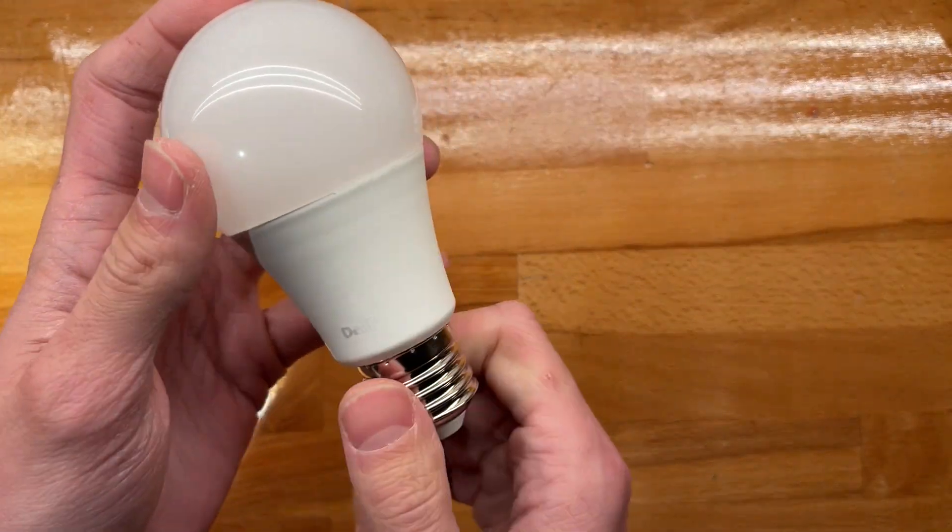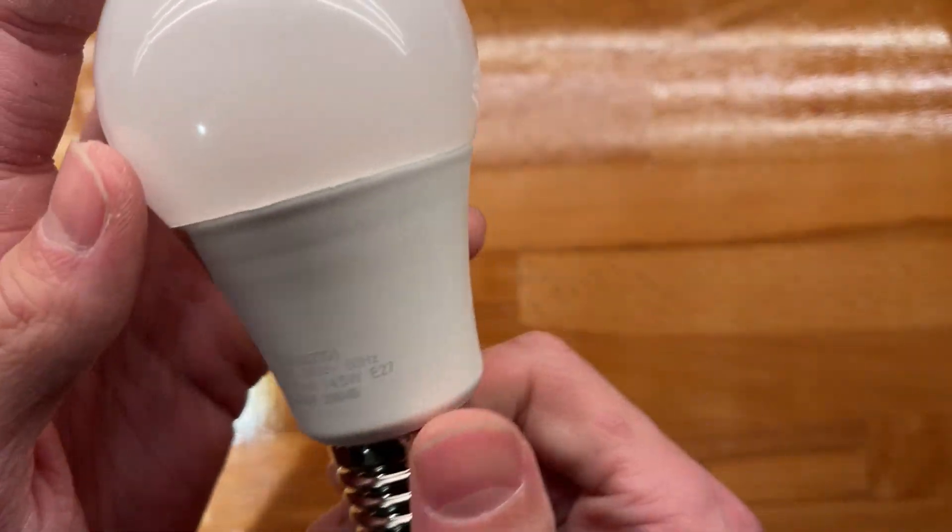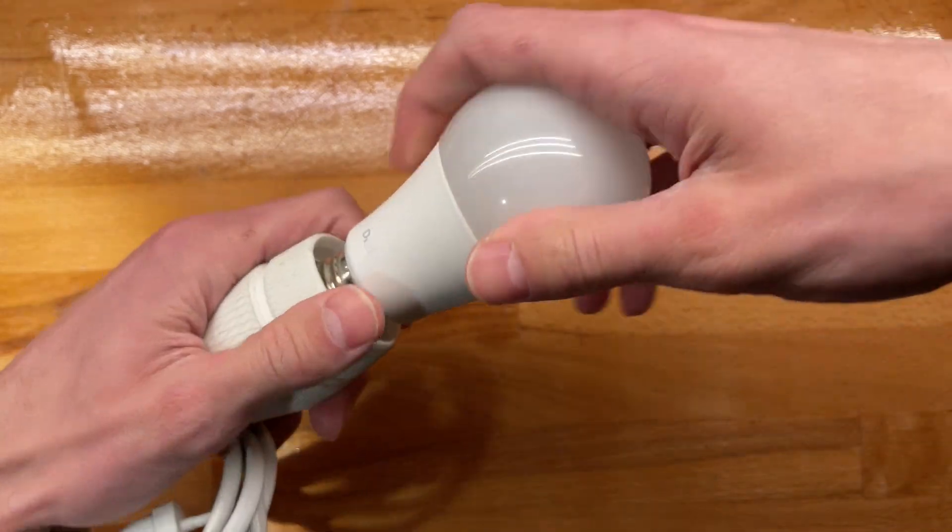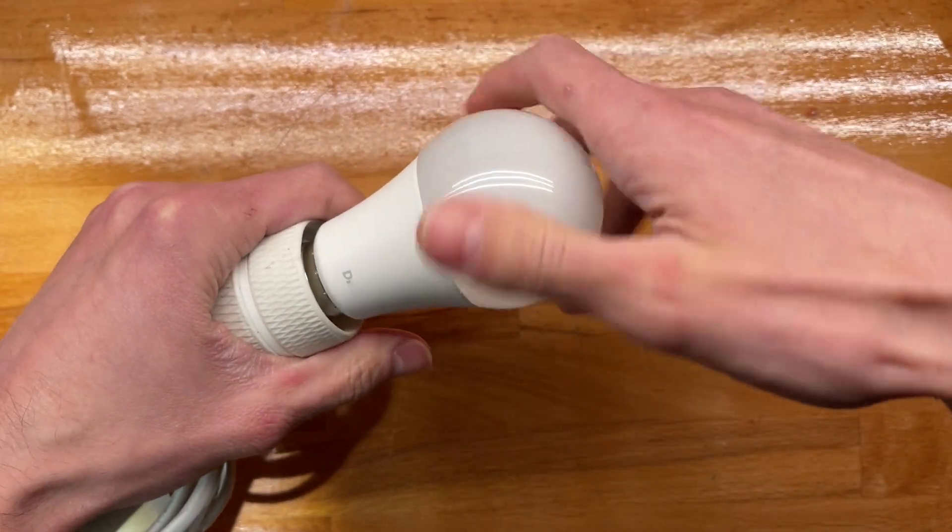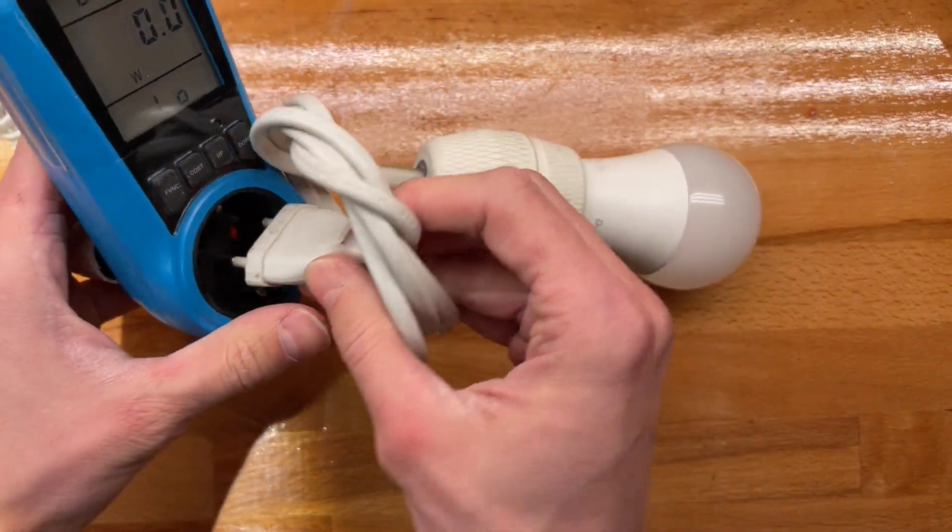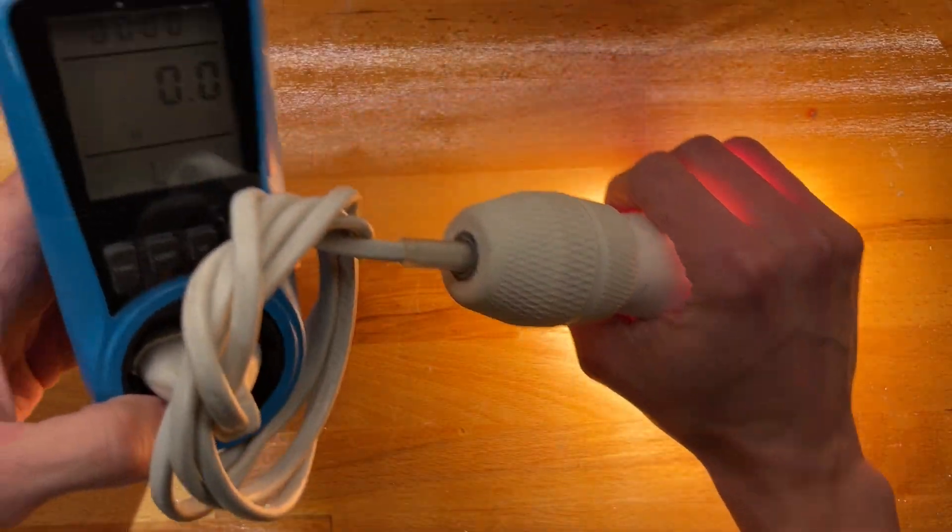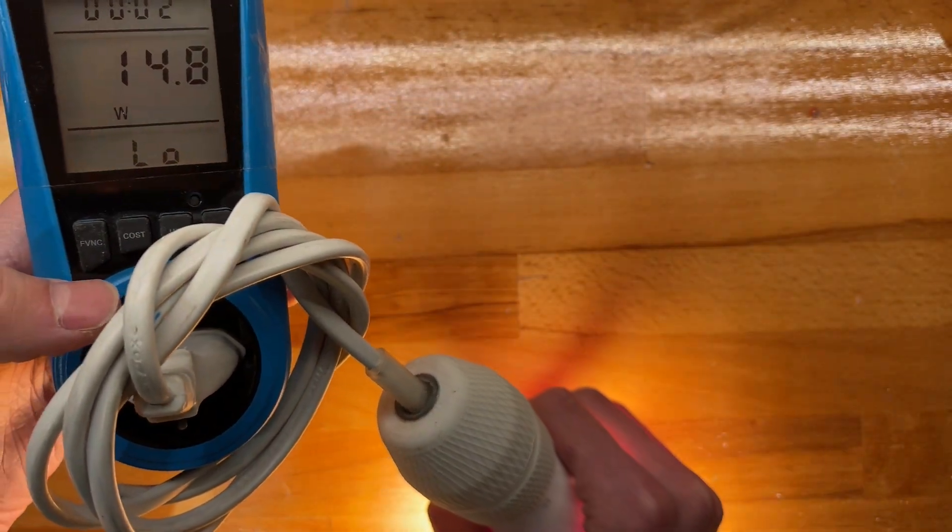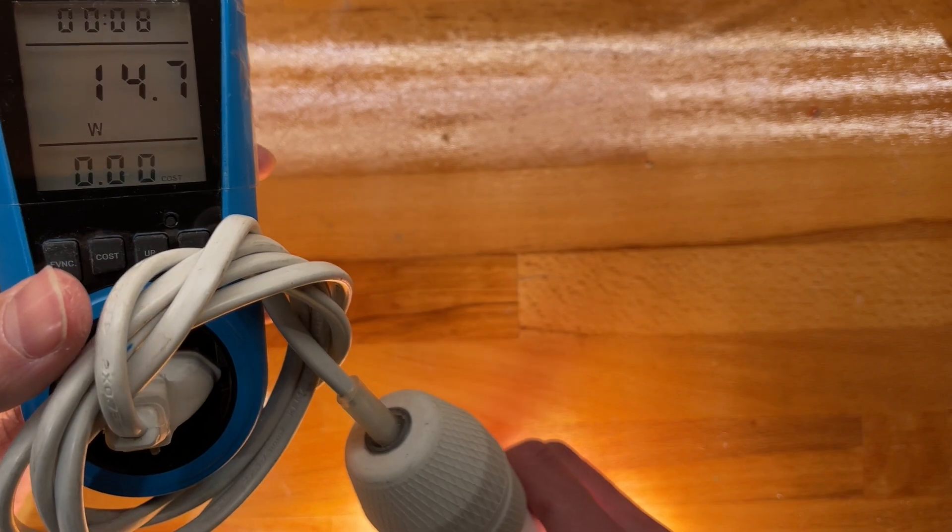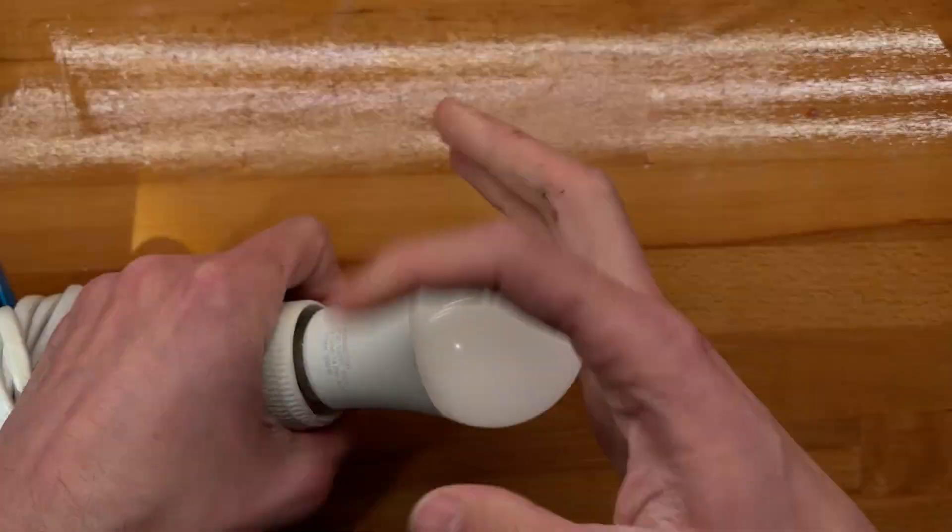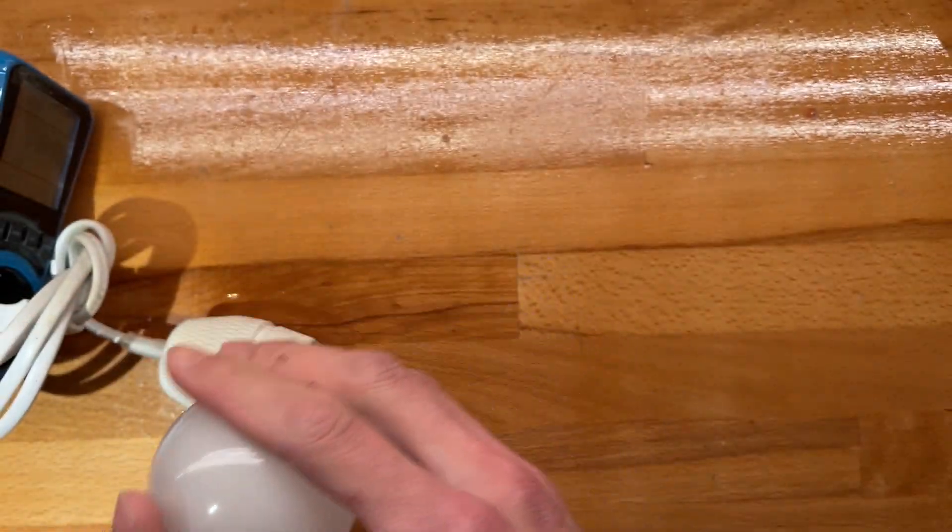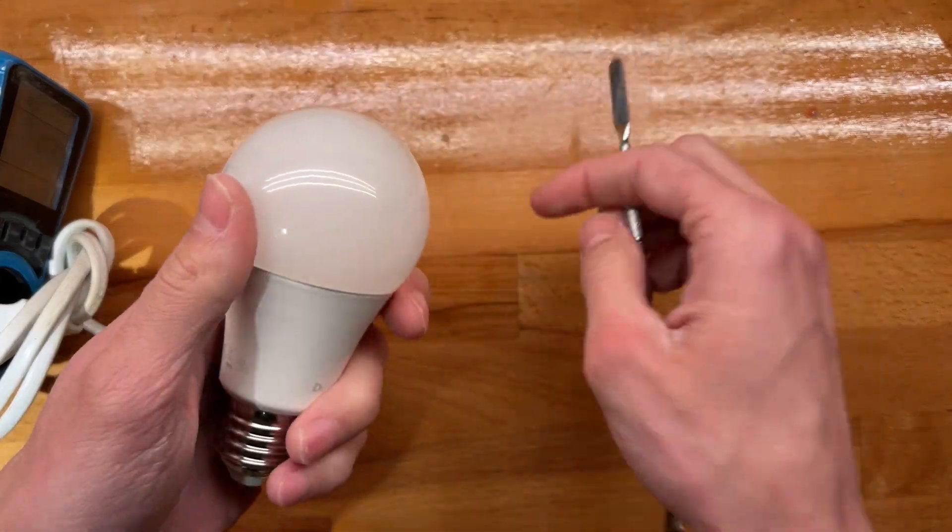All right, so same as before we have this 1500 lumen, 15 watt bulb. Let's see first of all what it looks like on the watt meter. I hate this watt meter, I hope no one buys it. Holy shit, so that's the lowest. What's the actual consumption? All right, it's 15 watts, not bad. 14.5, 14.7 - yeah, bang on.